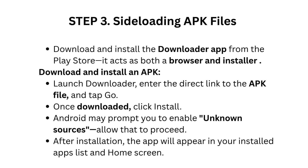Launch Downloader, enter the direct link to the APK file, and tap Go. Once downloaded, click Install. Android may prompt you to enable Unknown Sources — allow that to proceed. After installation, the app will appear in your installed apps list and home screen.